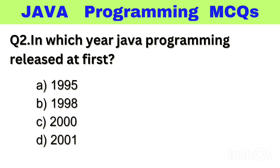Question number 2. In which year was Java programming released at first? Option A: 1995, B: 1998, C: 2000, D: 2001. The right answer is option A, 1995.